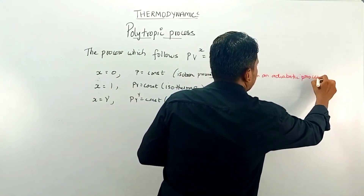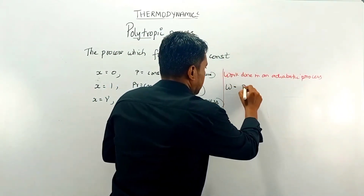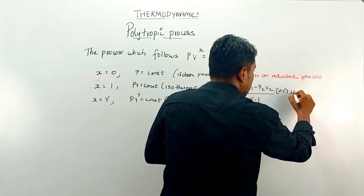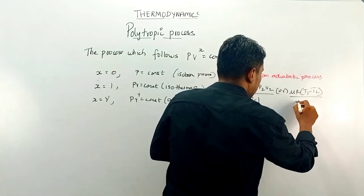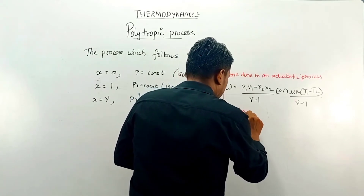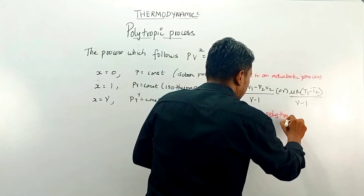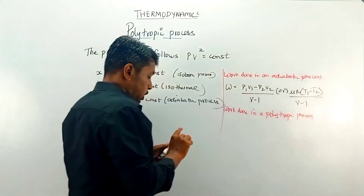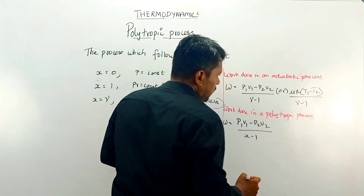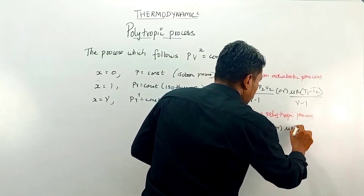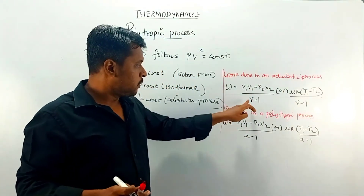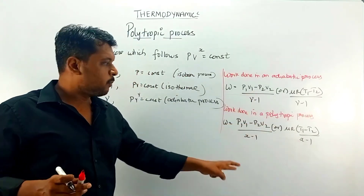In an adiabatic process, the work done is given by (P1V1 - P2V2) / (gamma - 1), or in terms of number of moles, mu * R * (T1 - T2) / (gamma - 1). In a polytropic process, the work done is given by (P1V1 - P2V2) / (x - 1), or mu * R * (T1 - T2) / (x - 1). The slight change is that gamma is replaced by x.